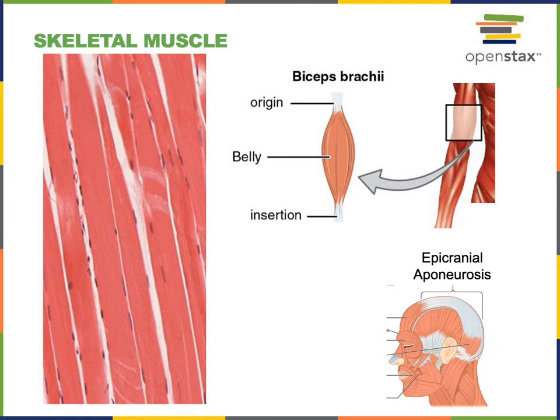Skeletal muscle contraction is voluntary. A somatic motor neuron will send a command by releasing a neurotransmitter to stimulate the contraction of skeletal muscle, and this excitation mechanism is under voluntary control. You can decide when you want to contract any of your skeletal muscles voluntarily.